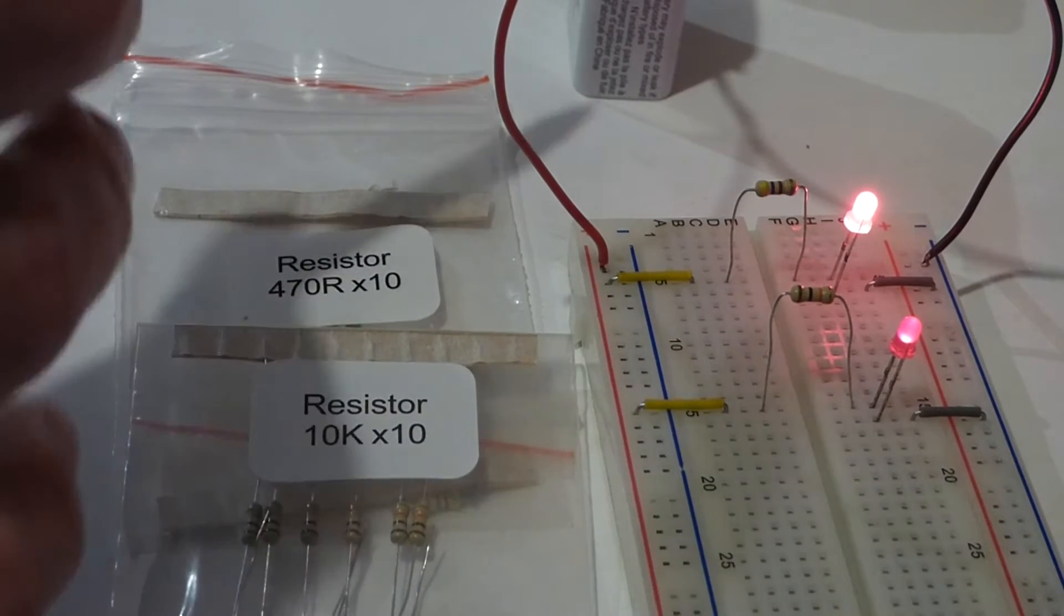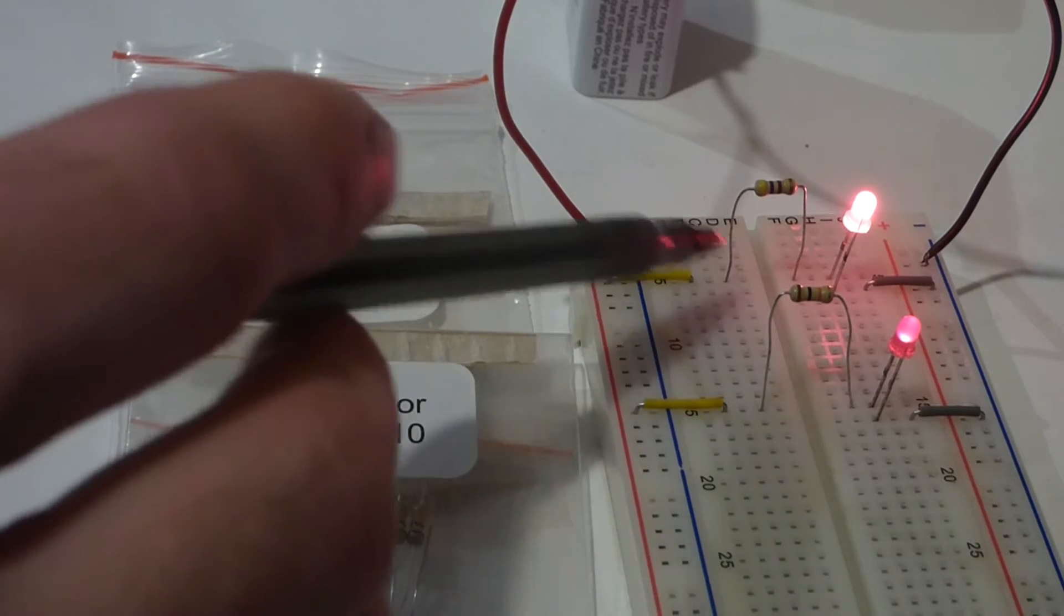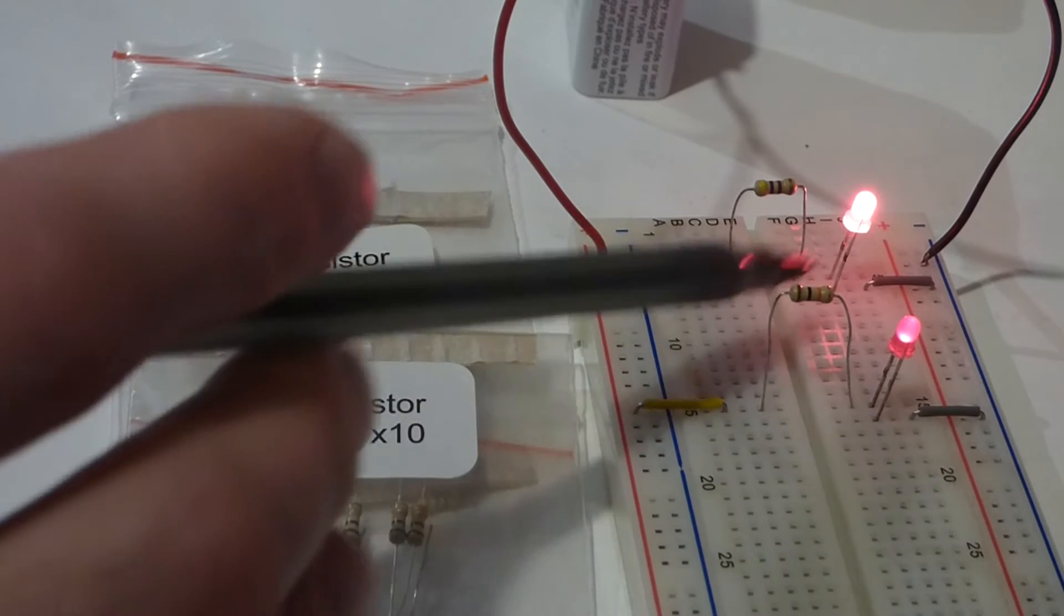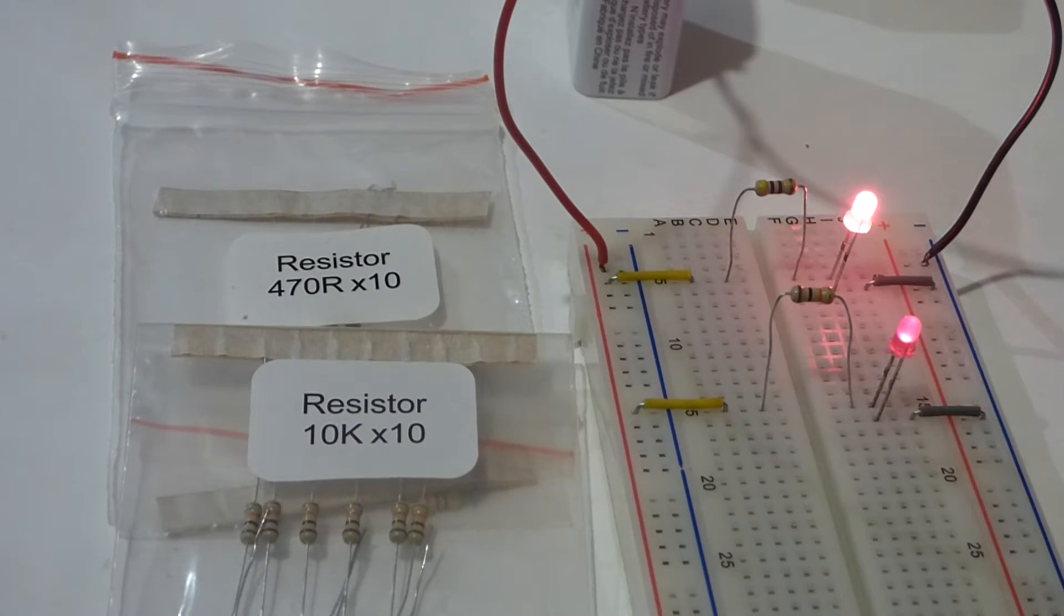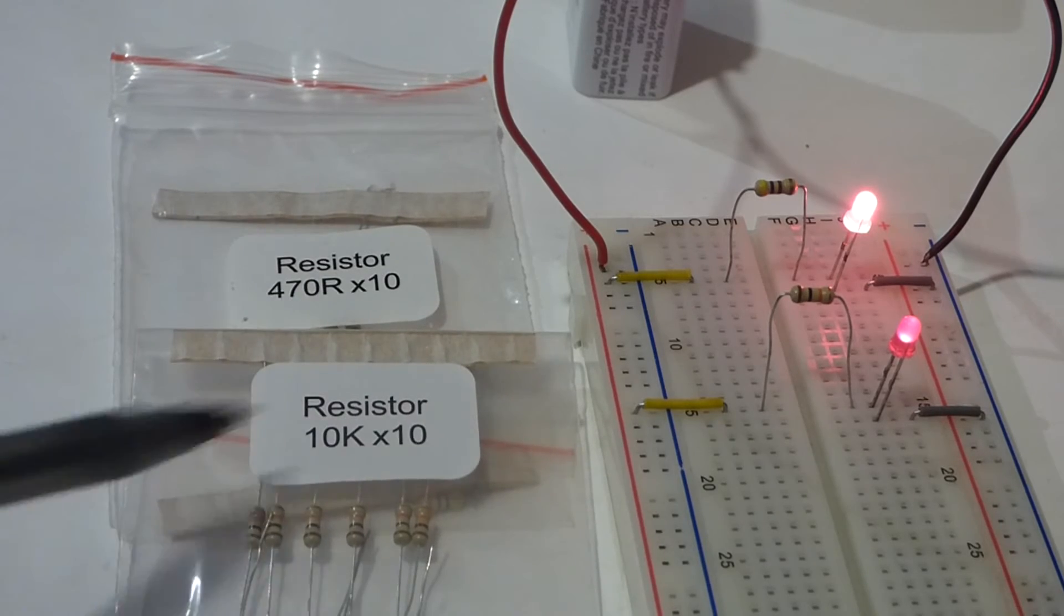So with a 9 volt battery, 470 ohms is really the lowest resistance you want protecting a circuit. If you add more components, they'll also add resistance but generally I just recommend 470 ohms.